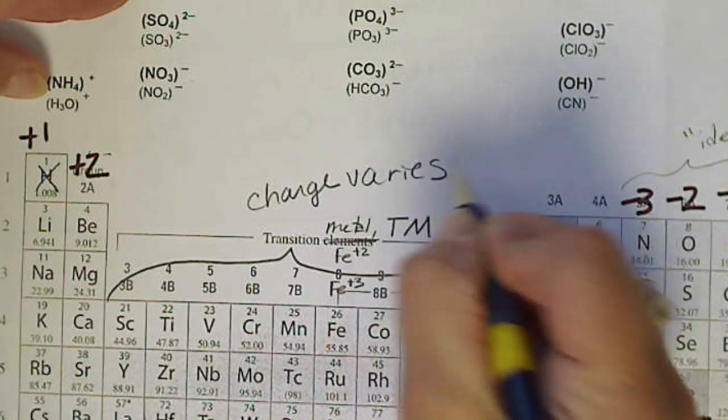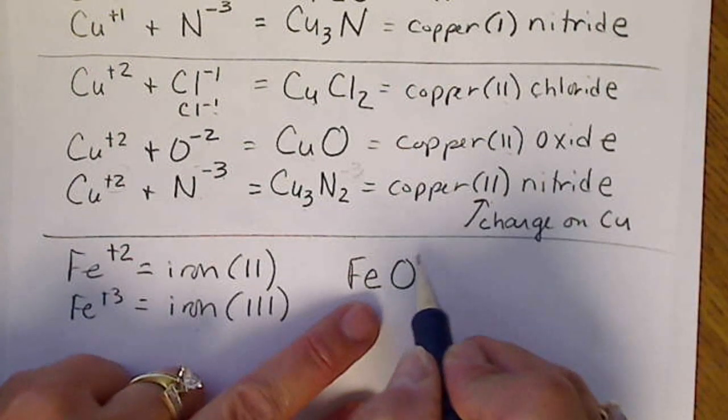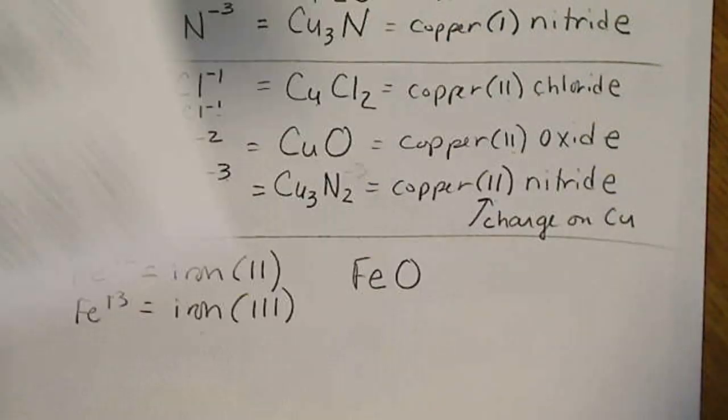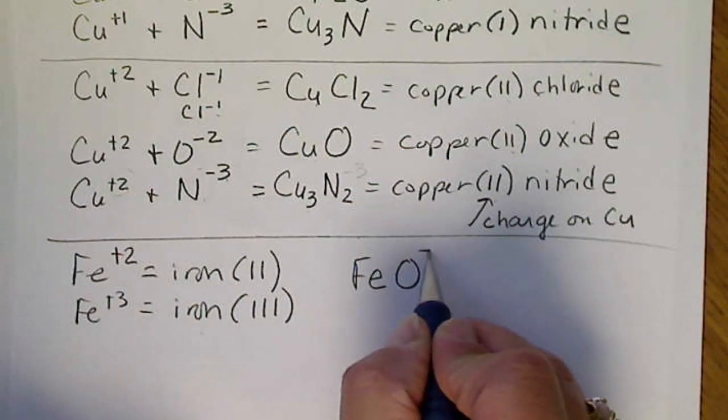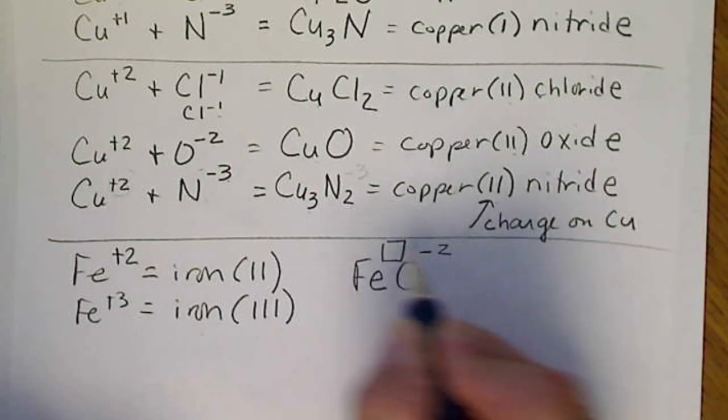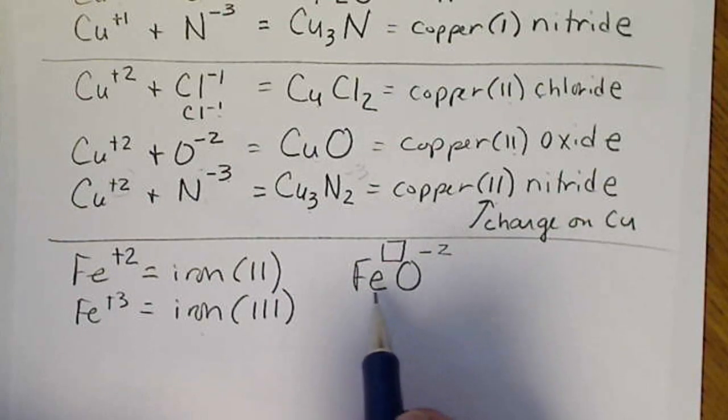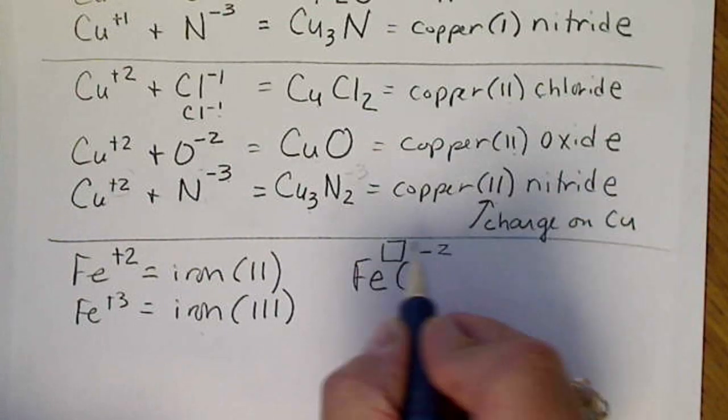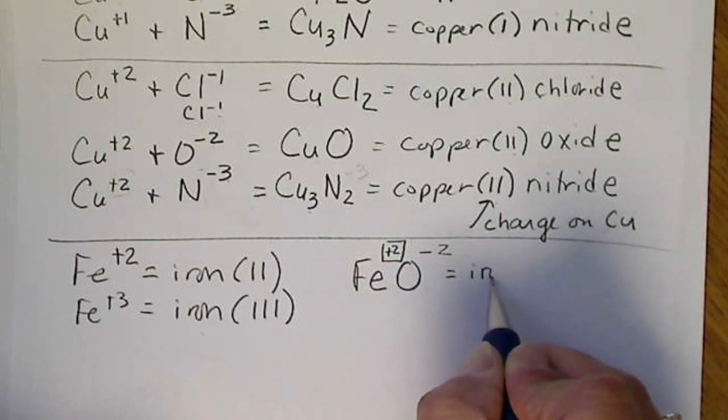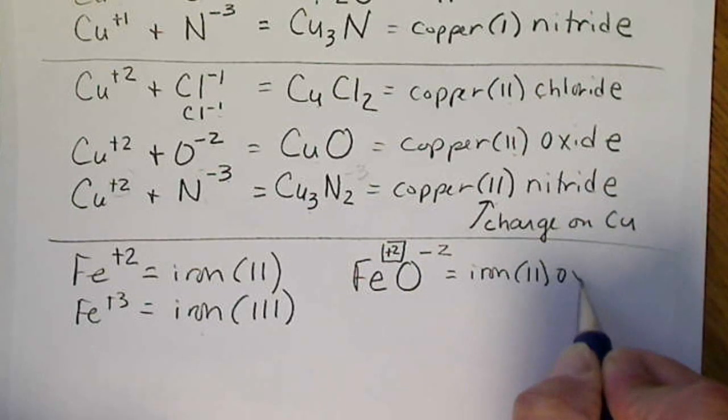So what we can do is use the non-metal to figure out what its charge is. So we find O on the periodic table. O is a minus 2. So I put the charge on oxygen, and that means I can figure out the charge on the iron. Since one of these and one of these has to cancel each other, this has to be a plus 2. So this is iron Roman number 2 oxide.